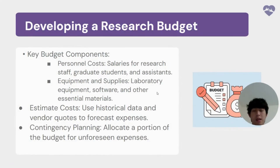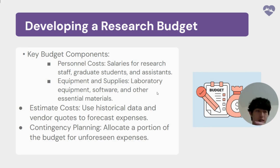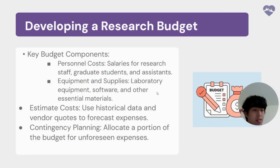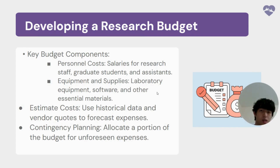One last topic is developing a research budget. I always advise expecting greater expenses than originally calculated, accounting for personal costs, equipment, and supplies. For example, if you're doing a chemistry experiment and a beaker breaks, you have to buy a new one — those are unforeseen expenses you didn't anticipate. So estimate costs higher than originally expected to account for all those personal costs, equipment, and everything else.